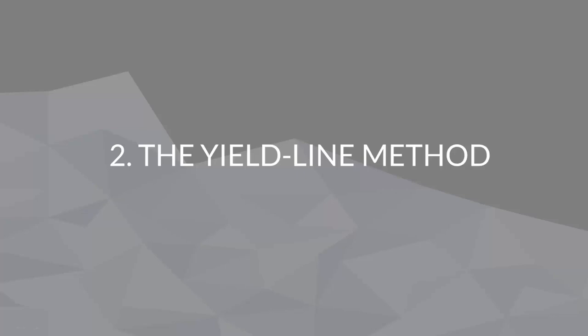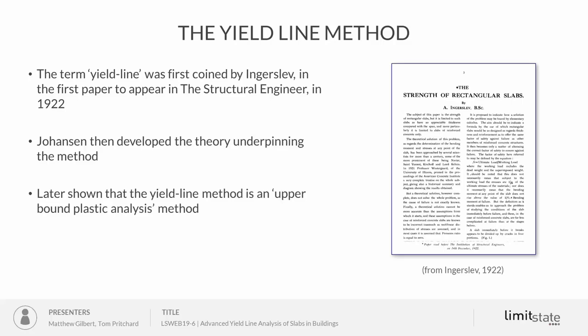In the context of today's talk, we're automating the yield line method and applying it to building analysis and assessment. The yield line method has been around for almost a century — the term was first coined in a paper published in The Structural Engineer in 1922, and subsequently greatly developed by Johansen in Denmark. It was later shown that the yield line method is essentially an upper bound plastic analysis method.